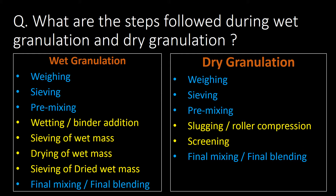What are the steps followed during wet granulation and dry granulation? There are three steps common to both: weighing, sieving, and pre-mixing. After this, in wet granulation, wetting or binder addition is done, followed by sieving of the wet mass, drying of the wet mass, sieving of the dried wet mass, and finally final mixing or blending. In dry granulation, after the initial three stages, slugging or roller compression is done, followed by screening and finally final mixing or blending.